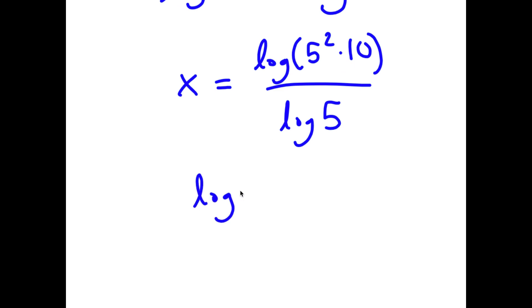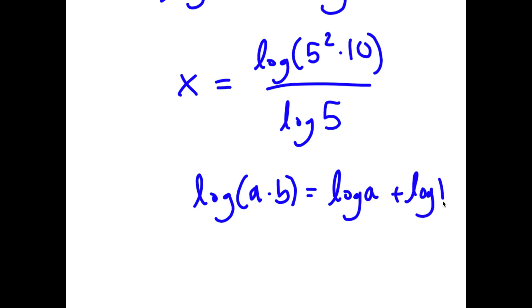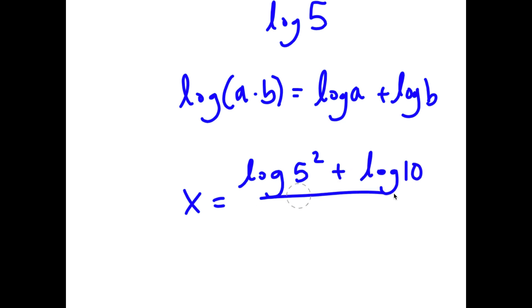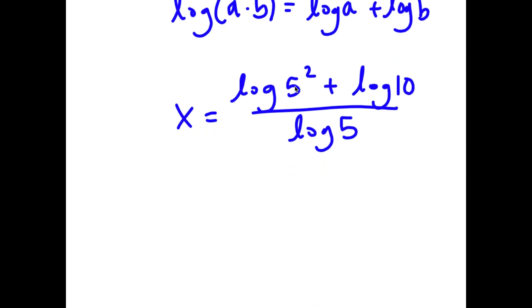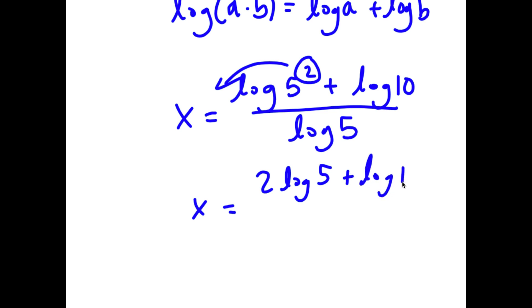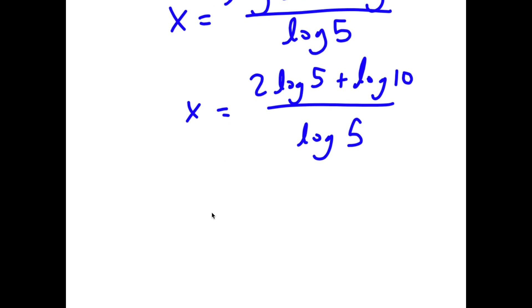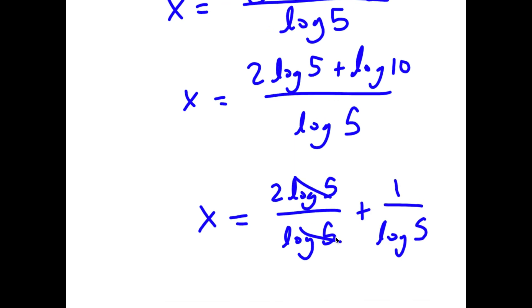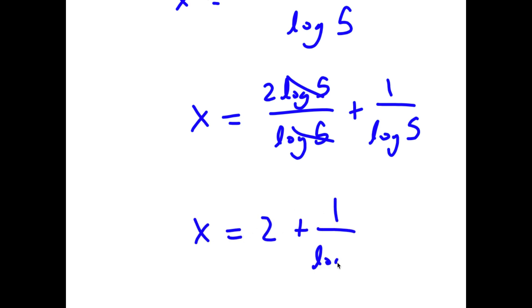If I have something in the form log a times b, this is equal to log a plus log b. So log of 5 squared times 10 becomes log 5 squared plus log 10, all over log 5. Applying the power rule, log 5 squared becomes 2 log 5. And log 10 is equal to 1. So I have x is equal to 2 log 5 over log 5 plus 1 over log 5. These two cancel out, so I get x is equal to 2 plus 1 over log 5.